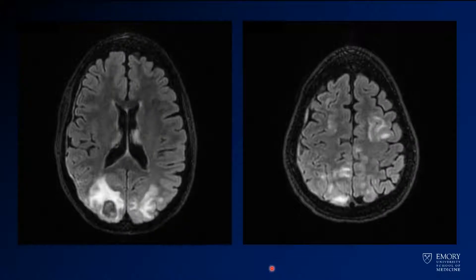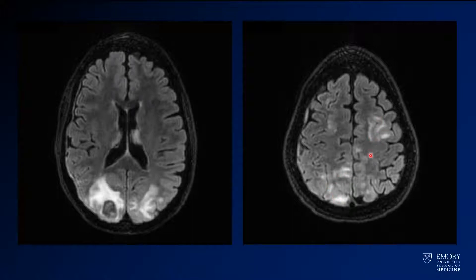Here are some images from the MRI, and that kind of gives it away. You've got some areas of susceptibility effect in the area of the hemorrhage — that's the hemorrhage you were seeing on CT. Now you have surrounding edema, and if you look, you've got some edema on the other side as well, with this patchy subcortical edema all over the place — multiple areas of subcortical edema.